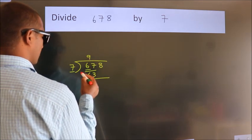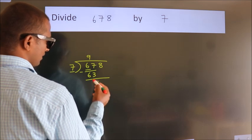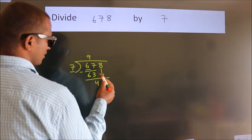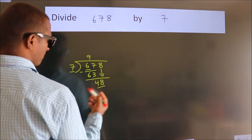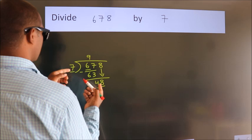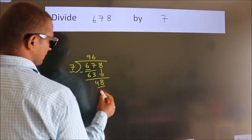Now, we should subtract. We get 4. After this, bring down the beside number. So 8 down. So 48. A number close to 48 in the 7 table is 7 sixes, 42.